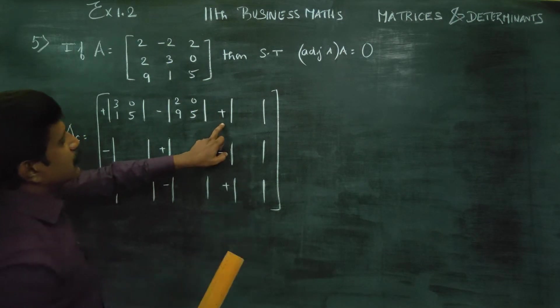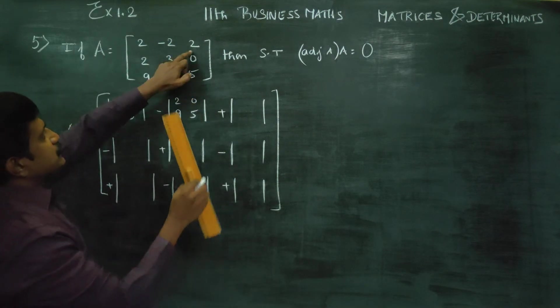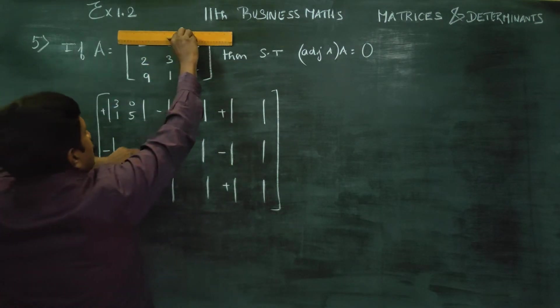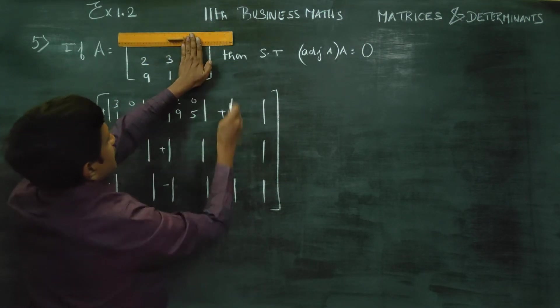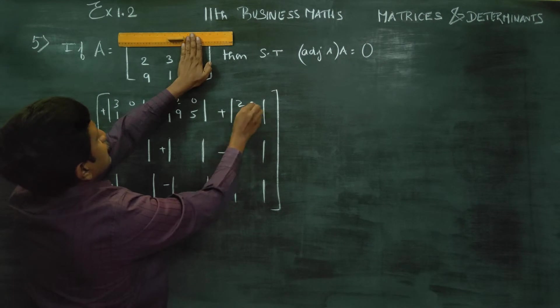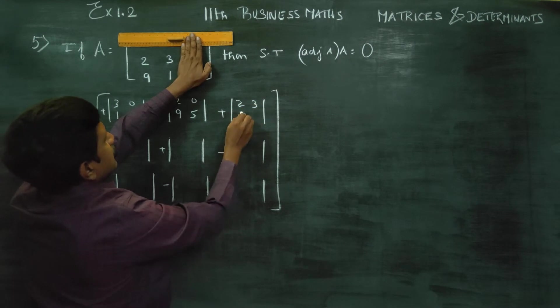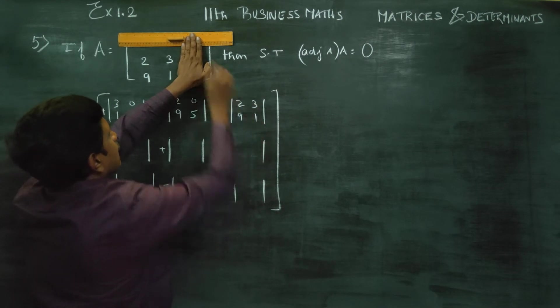For the third element, close this row and column to get the 2×2 submatrix with elements 2, 3, 9, 1.